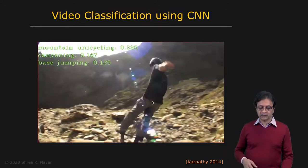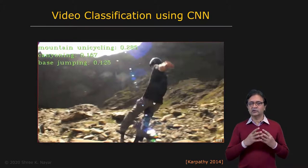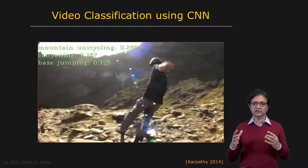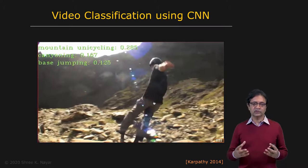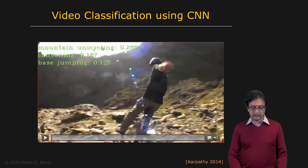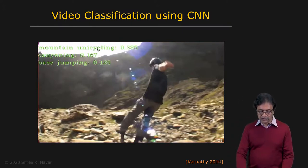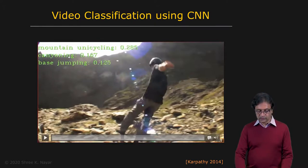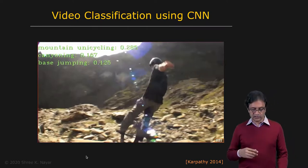And this has also been applied to videos. This is some work by Karpathy where you're going to see people doing many different sports activities. And what this system has been trained to do using a convolutional neural network is to basically classify the activity. And it provides three of the top ranked activities. So in this particular case, it says mountain unicycling and the second rank goes to canyoning. And the third one is base jumping. So I'll just play the video and you'll see the classifications change with time.